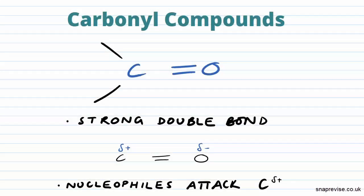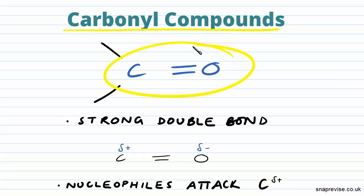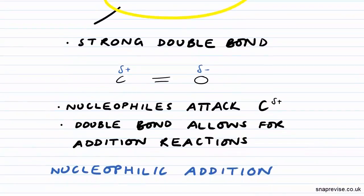Let's have a quick recap of what our carbonyl compounds are. They are compounds containing the carbonyl functional group, which is a carbon double bond to an oxygen, as you can see here. This double bond is incredibly strong, but due to the electronegativity difference between our carbon and our oxygen, a slight dipole forms.